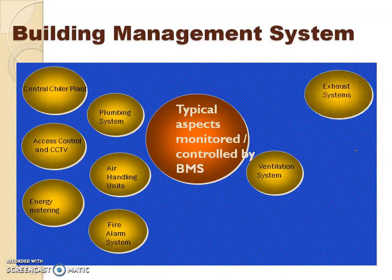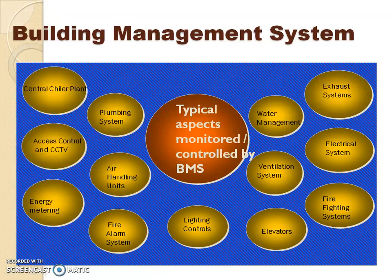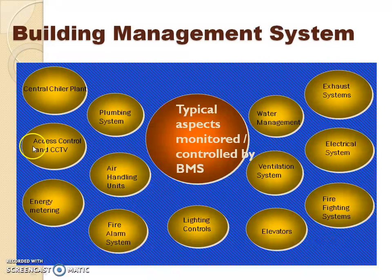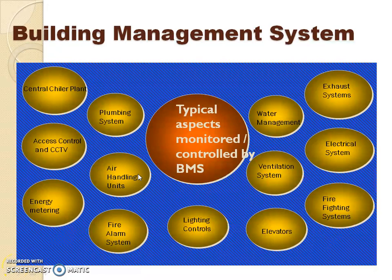If you look at the various aspects that are controlled and monitored by building management systems, safety and security system comes in a particular domain which is also optional to a building. Depending on the typology of the building, the priority is given more on the safety and security aspects. A vital example is if you take a high-secure building like an embassy building or buildings which need priority in terms of security, this system plays a vital role.